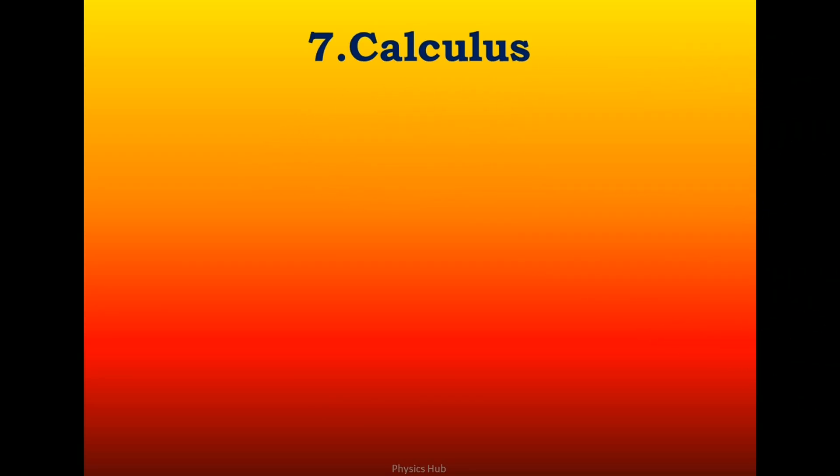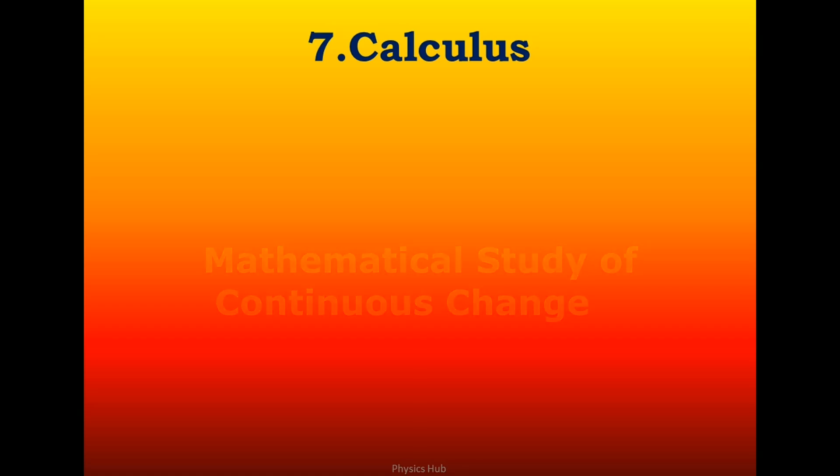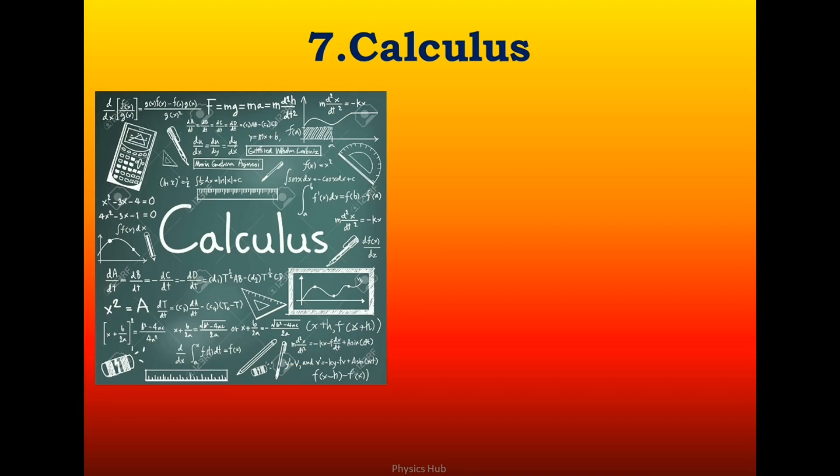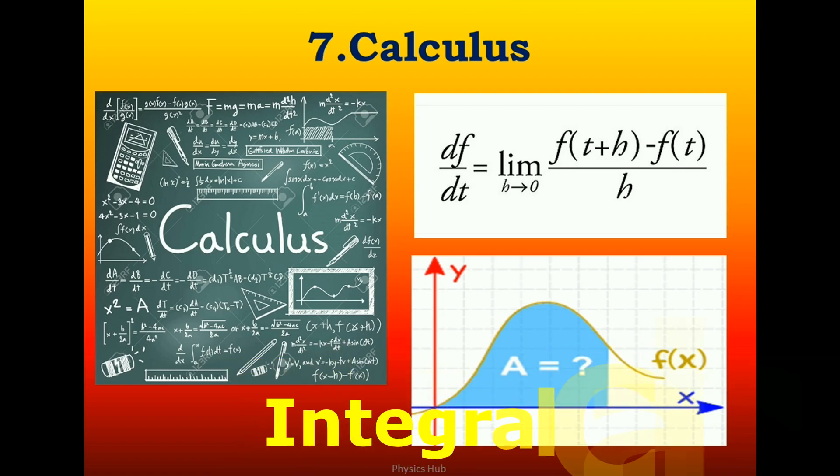The seventh one is the discovery of calculus. Calculus is the mathematical study of continuous change, in the same way that geometry is the study of shape and algebra is the study of generalization of arithmetic operations. It has two major branches. First one is differential calculus, as you can see the mathematical form: df/dt equals limit h tends to 0 of f(t+h) minus f(t) divided by h. It is concerning instantaneous rates of change and slopes of curves. The other major branch is integral calculus, concerning accumulation of quantities and the area under and between curves.